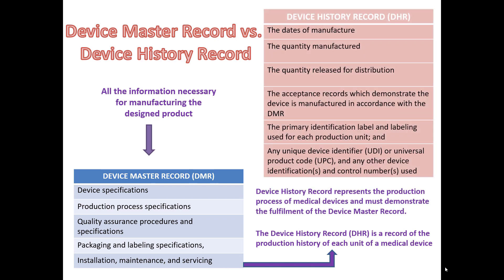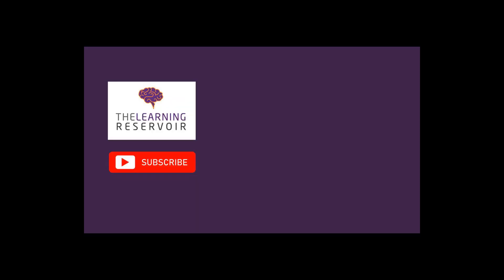The DHR is a record of the production history of each unit of a medical device, and it must demonstrate the fulfillment of the device master record. That concludes this short video. If you liked it, please give us a like, and if you want similar content, please consider subscribing to our channel.